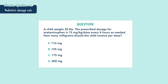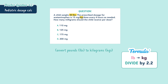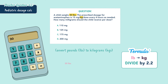Alright, time to crunch some numbers for our little patient here. The child weighs 30 pounds, but the formula gives us milligrams per kilogram, so first we need to convert pounds to kilograms. The way you convert pounds to kilograms is to divide by 2.2. So 30 pounds times one kilogram over 2.2 pounds — we then cancel out our pounds leaving us with 13.64 kilograms.